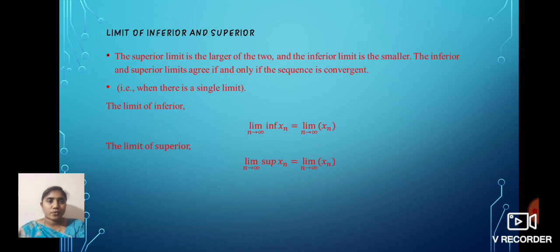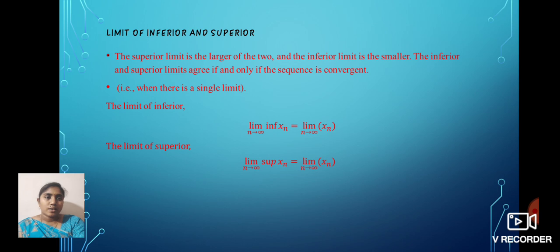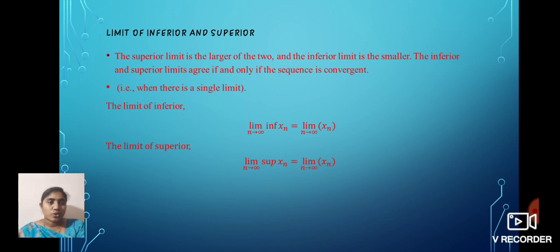Next, we define the limit inferior and superior condition. The limit superior is the larger of the two and the limit inferior is the smaller. The inferior and superior limits agree if and only if the sequence is convergent; therefore, when there is a single limit. The limit inferior condition: limit as n tends to infinity of the infimum of Xn equals lim n→∞ Xn. The limit superior condition: limit as n tends to infinity of the supremum of Xn equals lim n→∞ Xn.